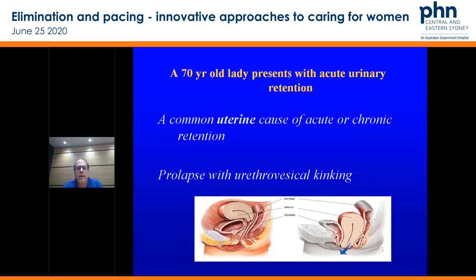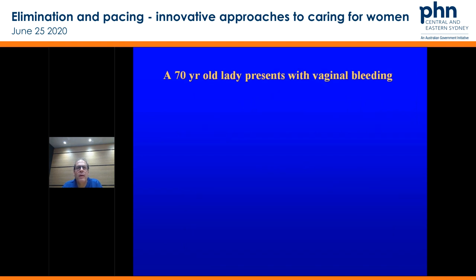You've got the diagram showing good support versus prolapse, and as prolapse proceeds there's sort of compression and kinking of the urethra and compression of the bladder and also the bowel. There may be a uterus present or there may not be, but retention can occur in both groups.